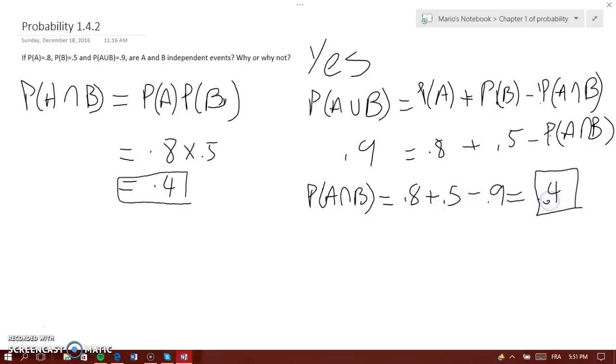So 0.4 equals 0.4 means they are actually independent events. The answer is yes. It's like a proofing thing.